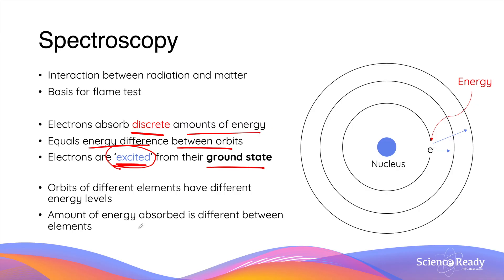It is very important to know that orbits of different elements have different energy levels due to intrinsic differences in atomic structure. As a result, the amount of energy absorbed during electronic excitation is very different between elements, and ultimately this is how the flame test helps us identify different metal cations.